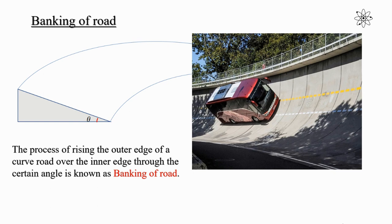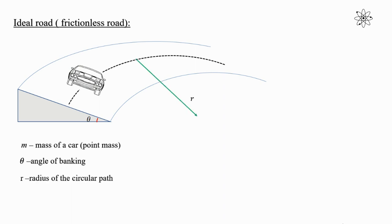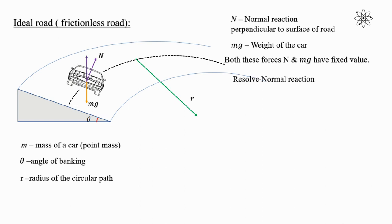For the discussion of banking of road we are going to consider motion of a car. Let the car be moving on a banked road having mass m — m being the point mass of the car. Let theta be the angle of banking and r be the radius of the circular path. The forces acting on the car are: N, the normal reaction acting perpendicular to the surface of the road, and the weight of the car acting vertically downward.